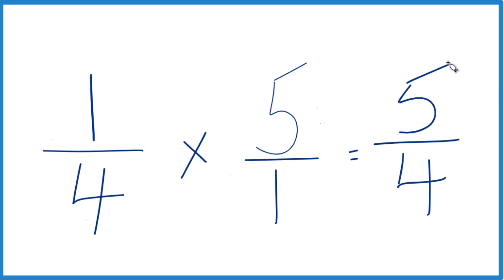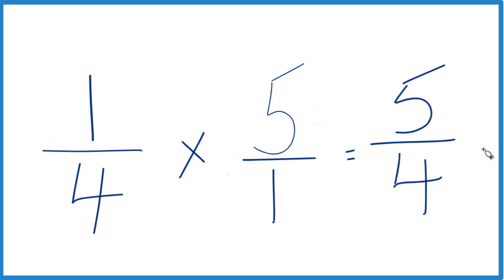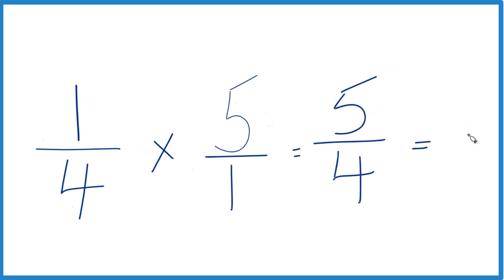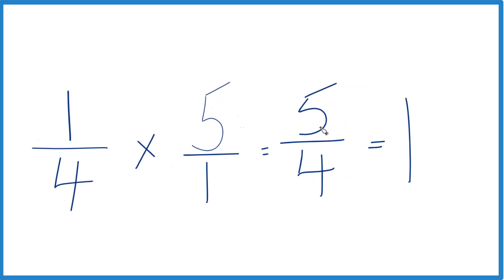This is an improper fraction because the numerator here is larger than the denominator. Could change it to a mixed number. 4 goes into 5, so 1 times 4, and then we'd have... that's 4. We'd have 1 left over, bring the 4 across. And we could also call this 1 and one-fourth.